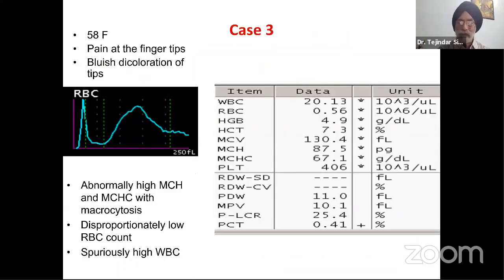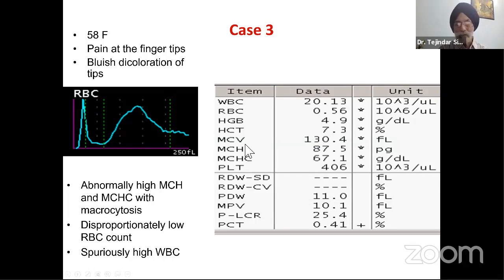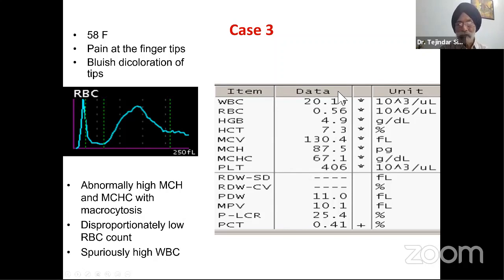The final diagnosis for case two was hairy cell leukemia. Case three: a 58-year-old female with pain at the fingertips and bluish discoloration. On the cell counter, WBC is high at 20,000, red cell count is very low at 0.5 million, hemoglobin very low at 4.9, hematocrit only 7 — disproportionately low for 4.9 grams hemoglobin. MCV is very high at 130, MCH around 90, and MCHC is going haywire at 67. Something is wrong — either the cell counter is not working properly or the sample is abnormal.